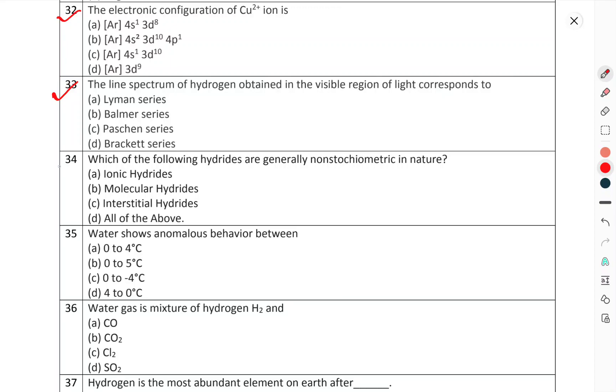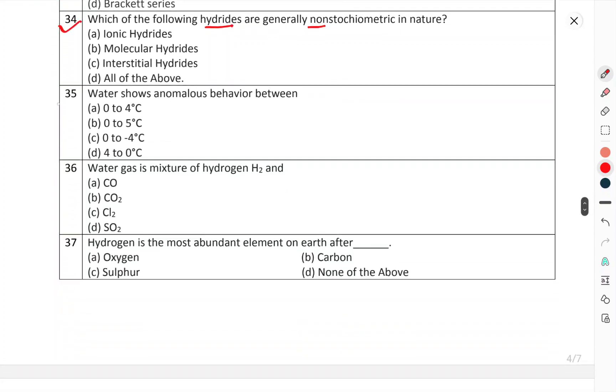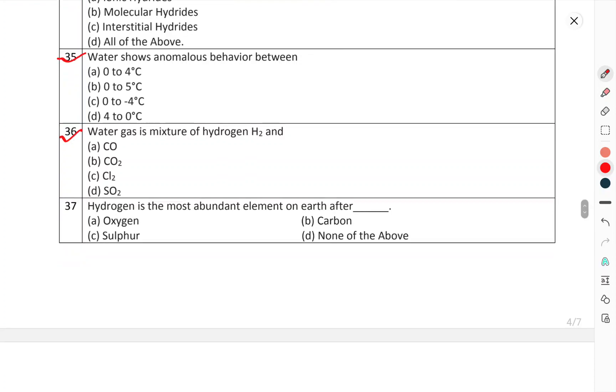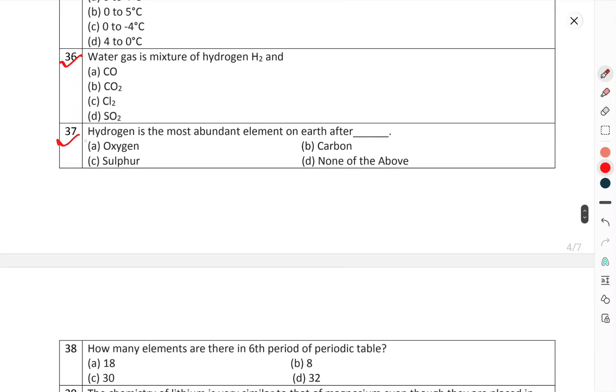Question number 33: The line spectrum of hydrogen obtained in the visible region of light corresponds to. Question number 34: Which of the following hybridized hydrates are generally non-planar geometric in nature? Question number 35: Water shows anomalous behavior with. Question number 36: Water gas is a mixture of H2 and what? Question number 37: Hydrogen is the most abundant element on earth after.